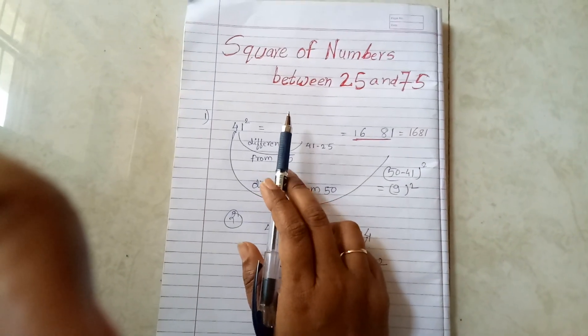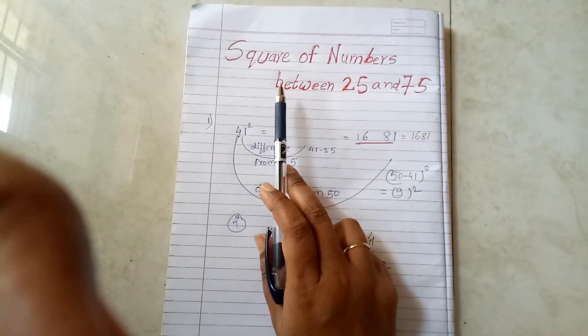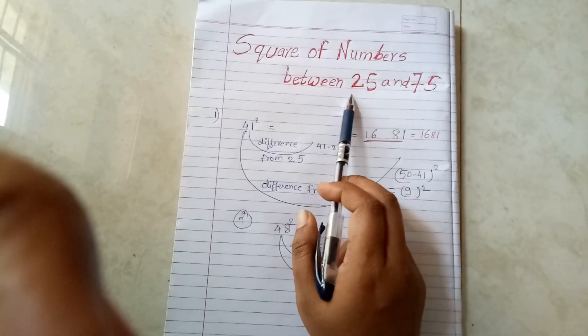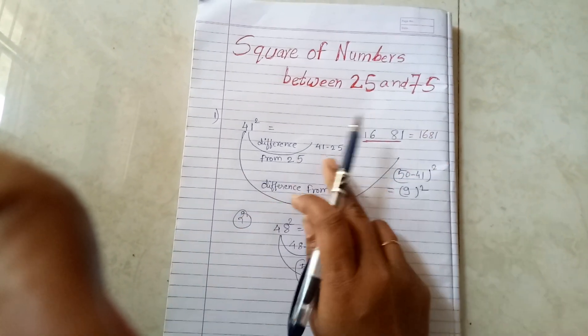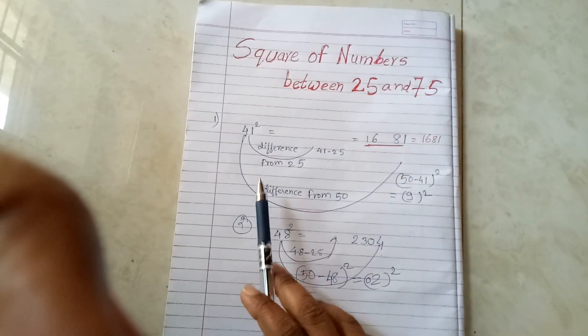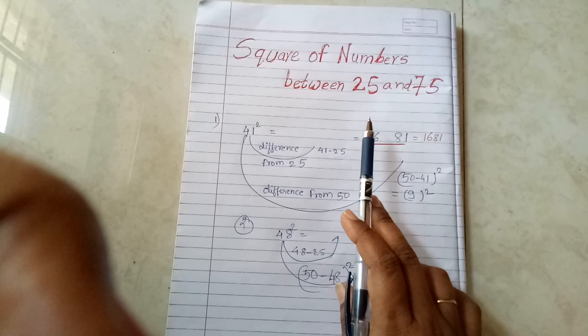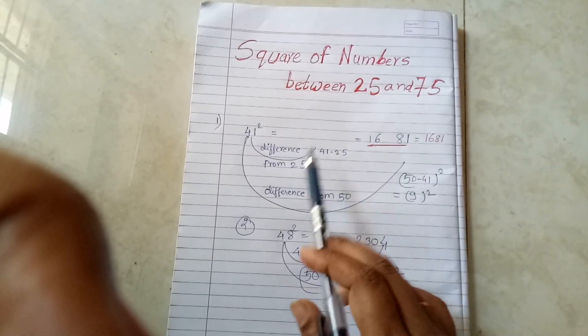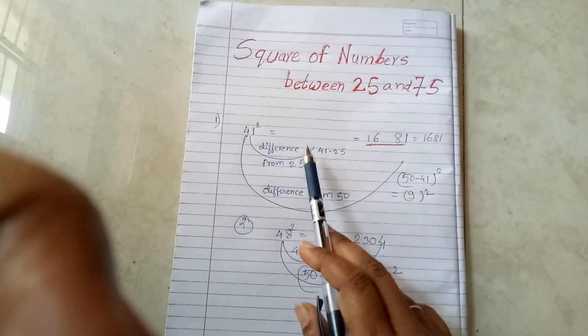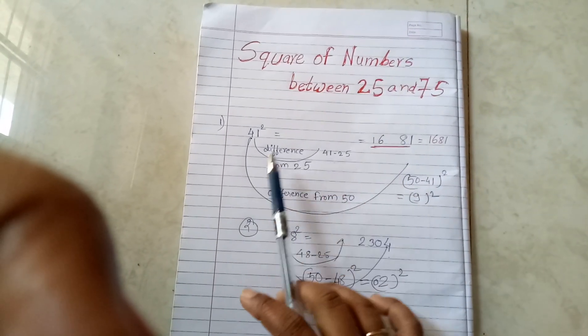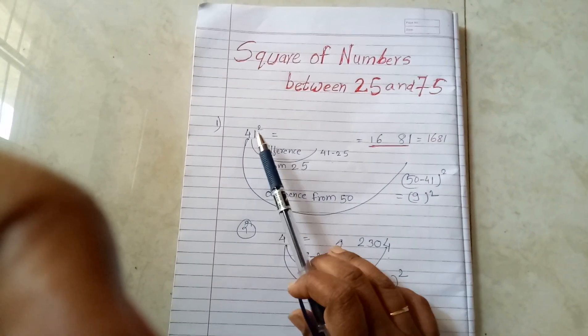Hello friends, this is again my new video for square of numbers between 25 and 75. This is a short method through which we can easily find the square of any number between 25 and 75. Likewise, you can also find squares of numbers between 75 and 125.